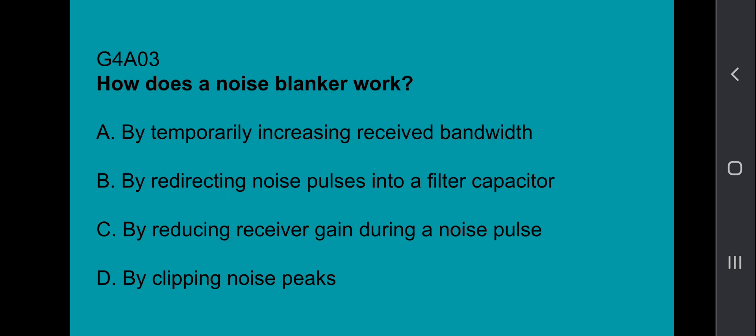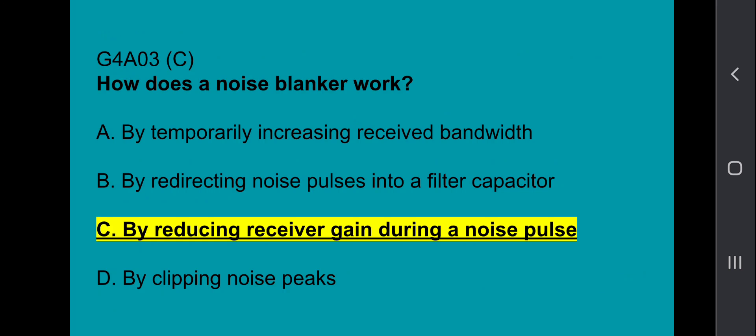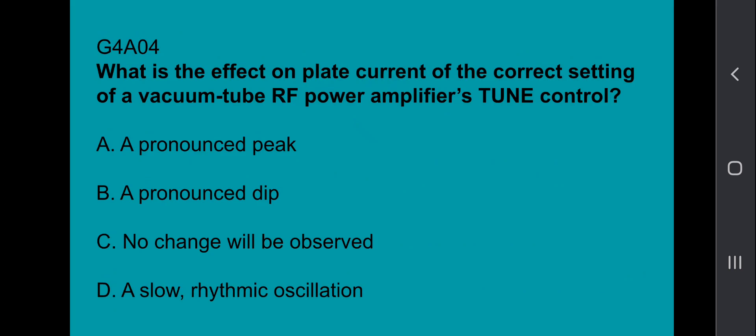G4A03, how does a noise blanker work? By reducing receiver gain during a noise pulse. G4A04, what is the effect on plate current of the correct setting of a vacuum tube RF power amplifier's tune control? That's a pronounced dip.